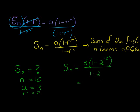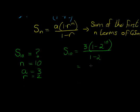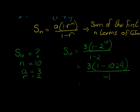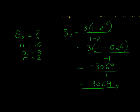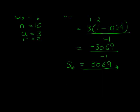Simplifying: 2 to the power of 10 is 1024, so 1 minus 1024 gives negative 1023 in the numerator. Multiplying by 3 gives negative 3069. The denominator is 1 minus 2 equals negative 1. So negative 3069 divided by negative 1 gives 3069. That's the sum of the first 10 terms of the geometric sequence 3 plus 6 plus 12 plus...